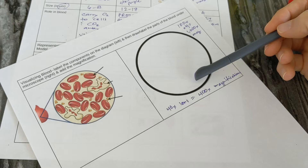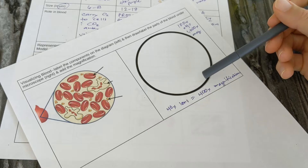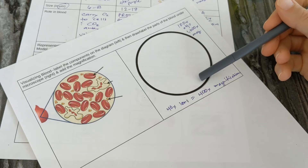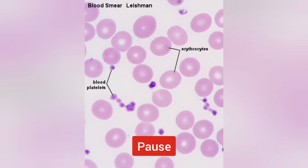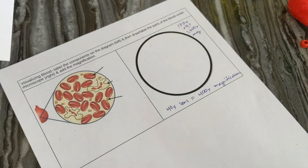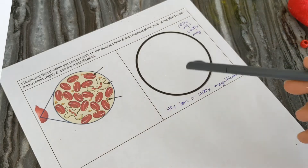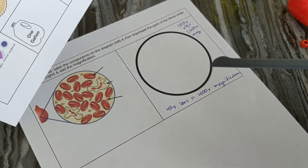Then look for the purple blobby ones — those are the white blood cells. Draw a couple of white blood cells and make sure to label them as white blood cells, WBCs, or leukocytes. Finally, look for the platelets — the teeny tiny bits. They're colorless in your blood, but once stained you can see some color. Draw a couple of platelets; you can see that they're much smaller than the red blood cells. Note that we can't see the plasma in a blood smear, so you should have labeled the red blood cells, the white blood cells, and the platelets, but not the plasma.